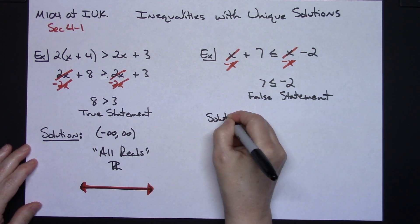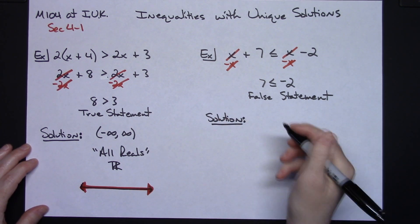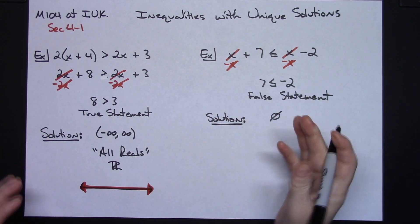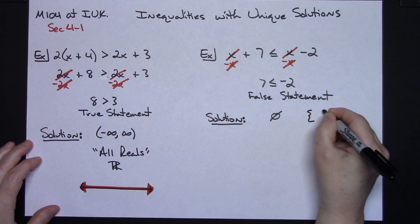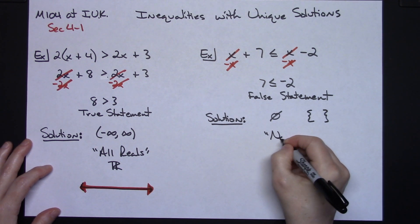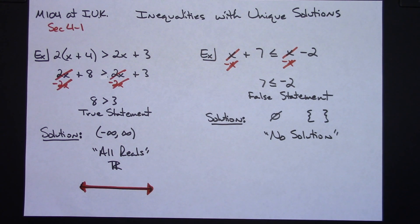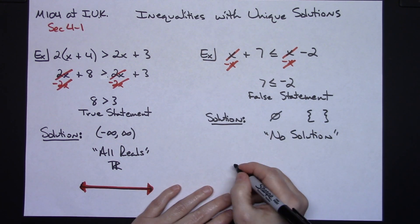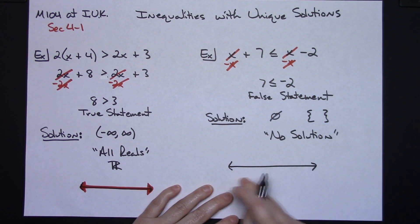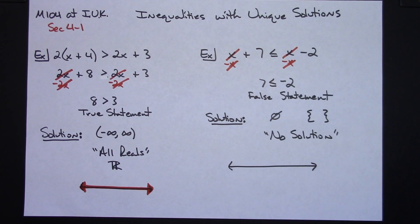The way we're going to write this solution, again a variety of different ways. Technically I could do the empty set solution sign, I could do brackets with nothing in it. More commonly is just for people to write no solution. If I were going to try to place this on a number line, it's just going to be a blank number line because no number on this number line is going to be able to be plugged in to make that a true statement.